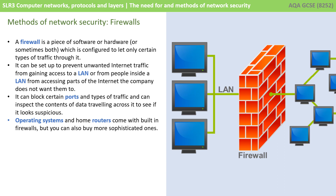The third method is firewalls. A firewall is a piece of software or hardware, or quite commonly both, which is configured to let only certain types of traffic through it. It can be set up to prevent unwanted internet traffic from gaining access to a local area network, but it can also be configured to prevent people inside a local area network from accessing parts of the internet that people in that network don't want you to. You're probably used to this from school — you no doubt have a firewall installed that prevents you accessing information on the internet deemed inappropriate during school time. A firewall can block certain ports and types of traffic and can even inspect the contents of traffic travelling across the firewall to see if it looks suspicious. Most operating systems and your home router will come with built-in firewalls, but you're also able to buy more sophisticated ones from private vendors.